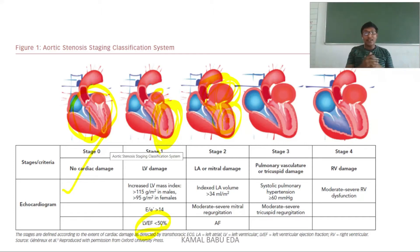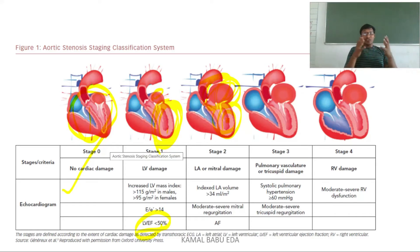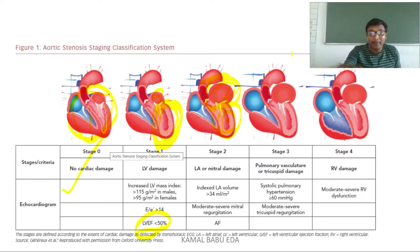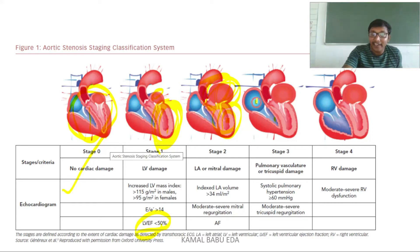Due to mitral regurgitation, atrial fibrillation can be observed. In Stage 3, pulmonary vasculature is affected and tricuspid valve damage occurs. The backflow from the left atrium enters the pulmonary vasculature and then the right ventricle, causing damage to the tricuspid valve situated between the right ventricle and right atrium.